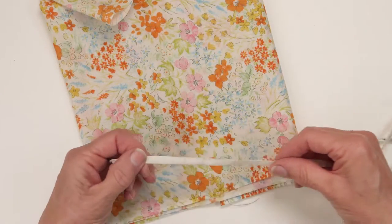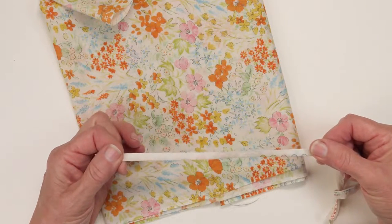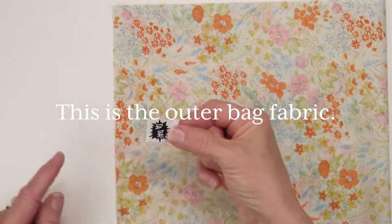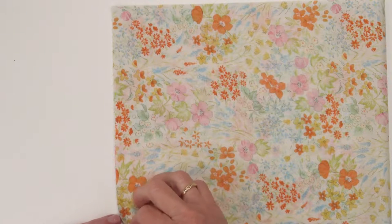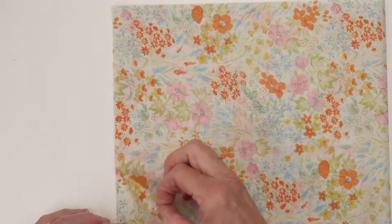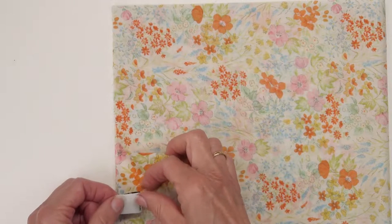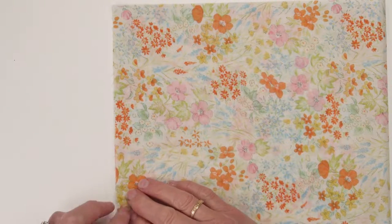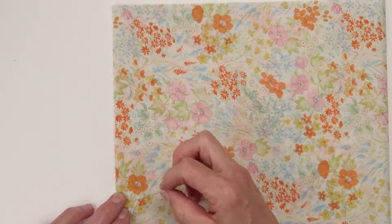Place one of your strips right sides together. If you're going to include a tag place it maybe an inch or so up from the bottom and pin that in place.